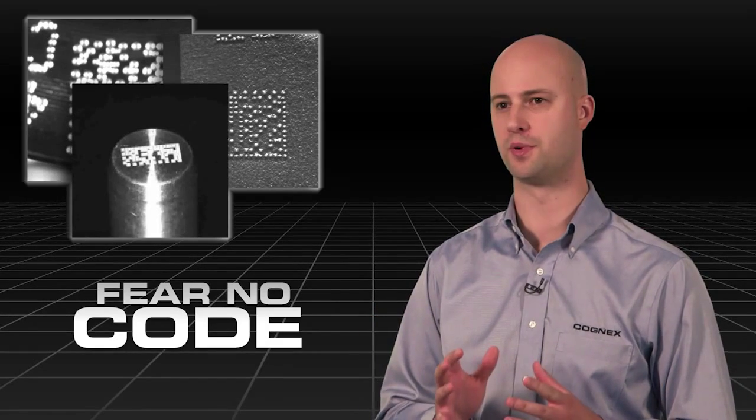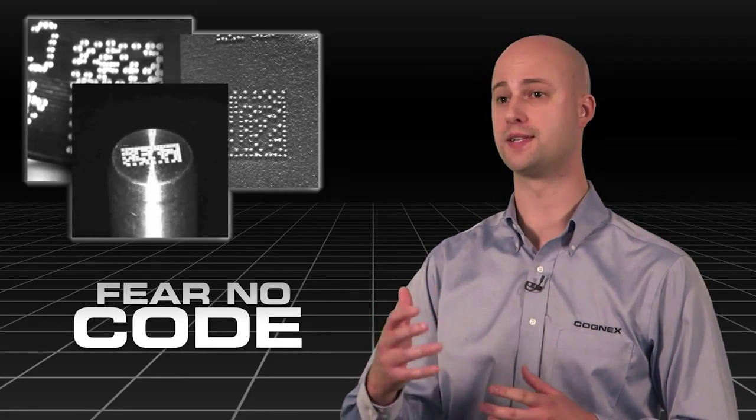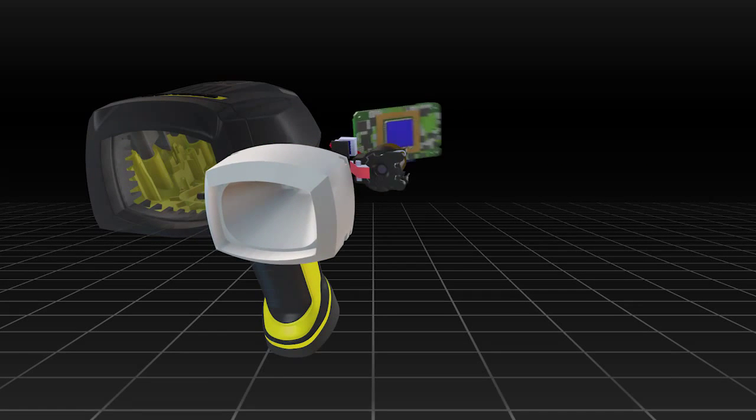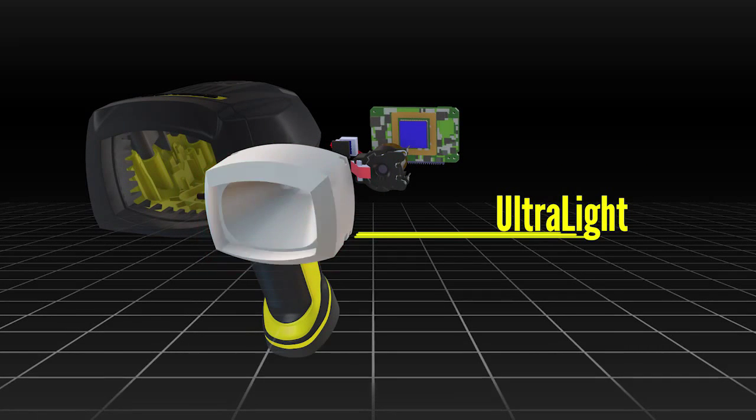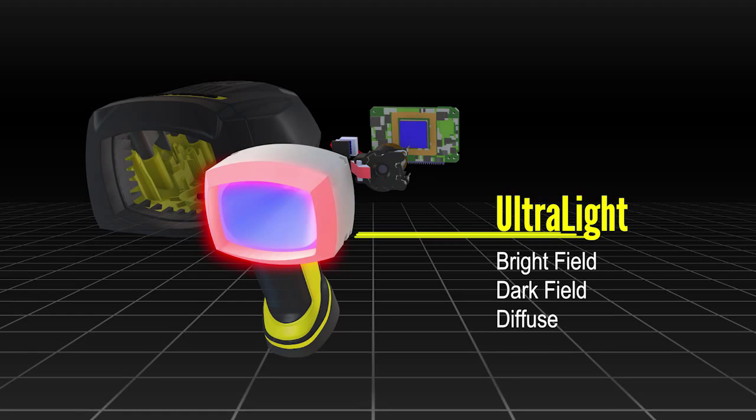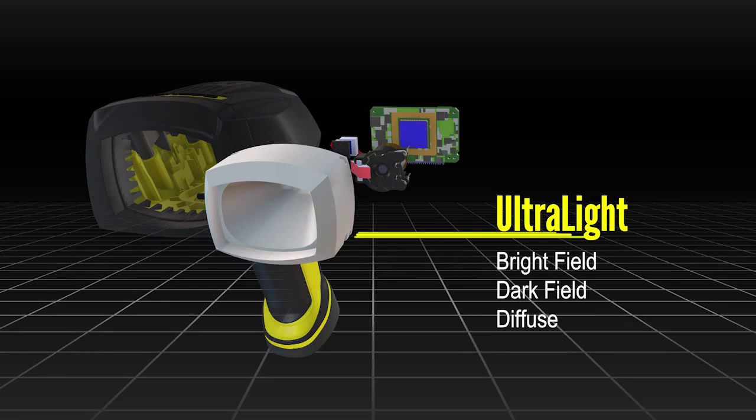But reading those codes is only the first part. Really, we need to get the best image possible before sending it to those algorithms. So we have our ultralight technology, and that allows us to create bright field, dark field, and diffuse illumination options to get the best image possible.